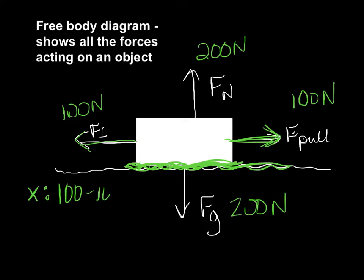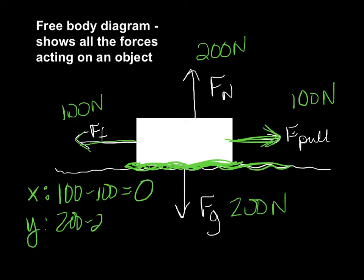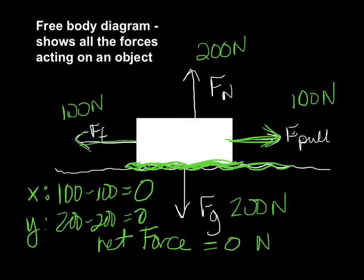So I take 100 minus 100, and my net force in the x direction is 0. In the y direction, they're also in opposite directions: 200 minus 200, so my net force is 0 Newtons. So the object is either sitting still or moving at constant speed — we don't know which from the free body diagram alone.